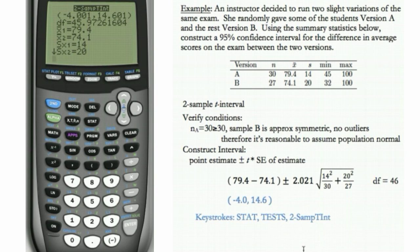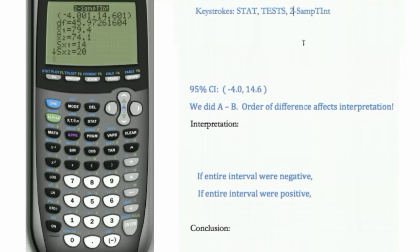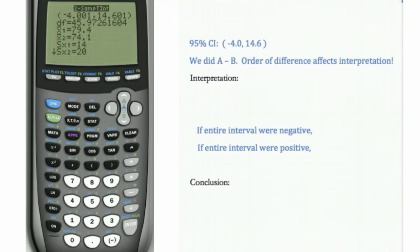So now, we can interpret our interval. So we have this confidence interval here. We have to remember what order we did the difference in. We did A minus B. And that, we can do the order either way, but which one we choose affects the interpretation.